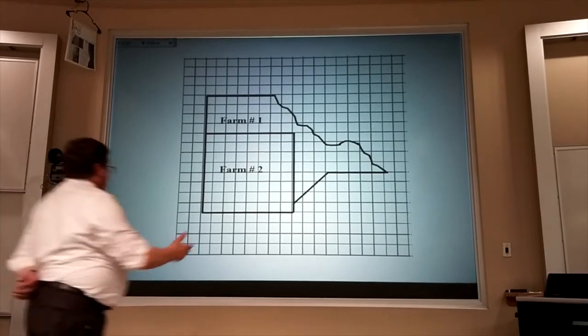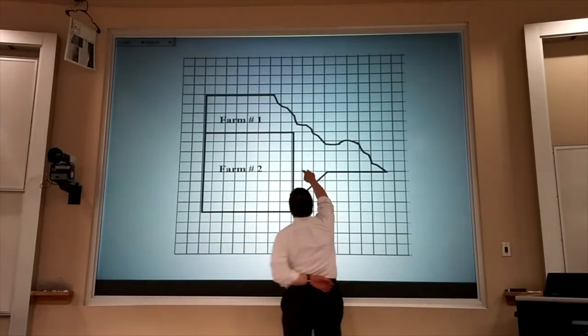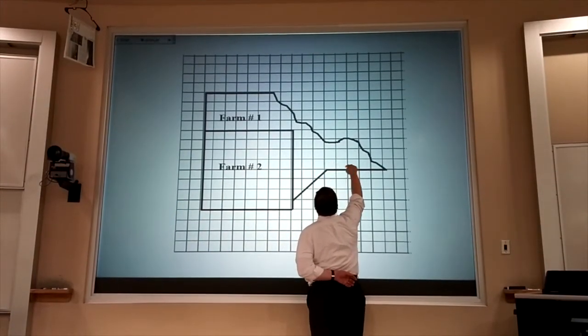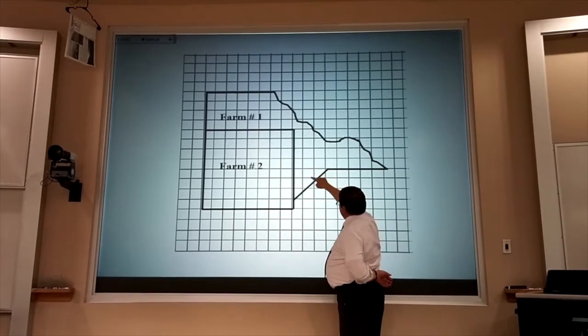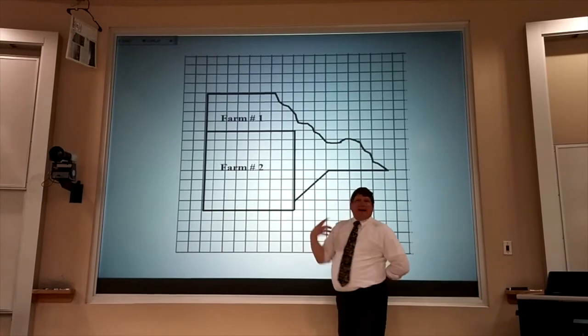But if I'm trying to find the area of this farm number one, I've got to go 1, 2, 3, 4, 5, 6, 7, and a half, and two-thirds, and three-fourths. I've got to add them up.